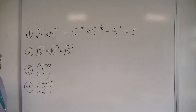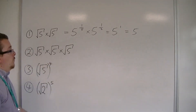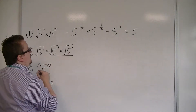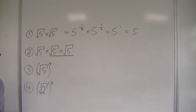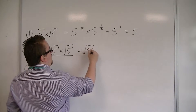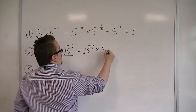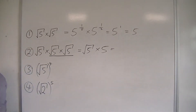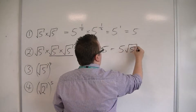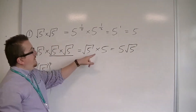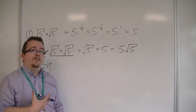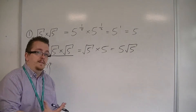If you've got root 5 times root 5 times root 5, we know what the first part is — that is 5. So it's actually root 5 times 5, which we can write as 5 root 5. It's kind of like having a times 5 if you were looking at algebra — you would write that as 5 lots of a, 5a.